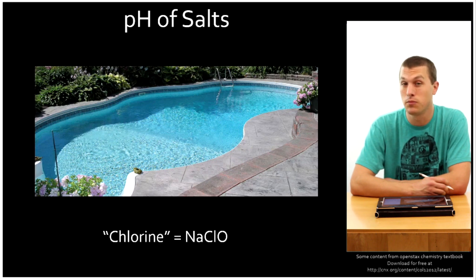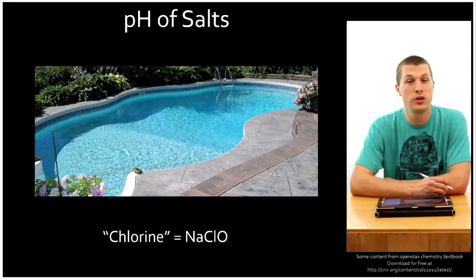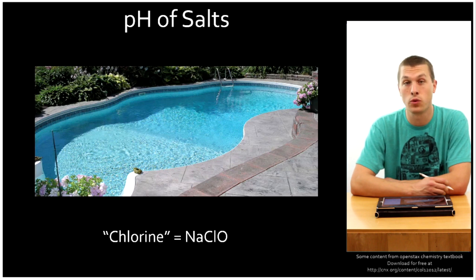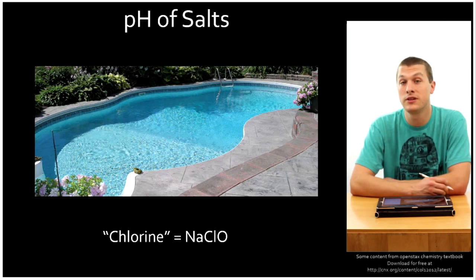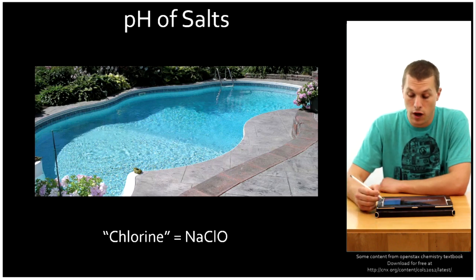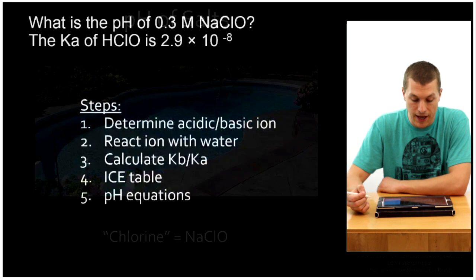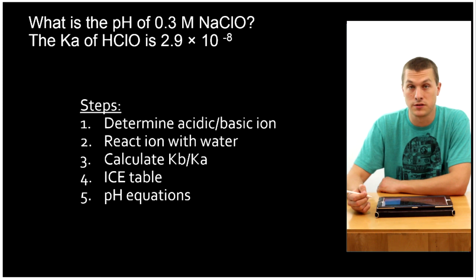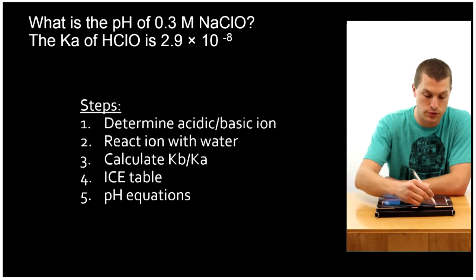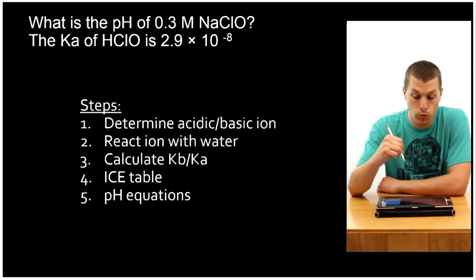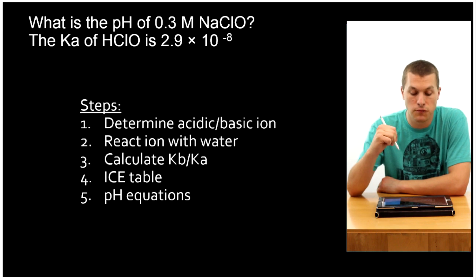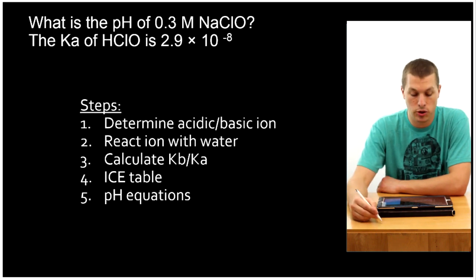If you're not familiar with salts acting as acids or bases, I recommend you check out my previous videos on those, and I'll link to those below. So we're going to solve a problem where we look at the pH of a sodium hypochlorite solution, an NaClO solution. The problem is: What is the pH of 0.3 M sodium hypochlorite? And it gives us the Ka of HClO.